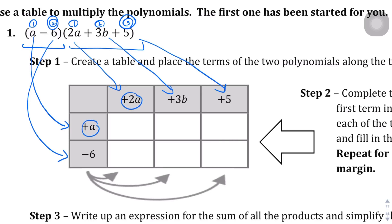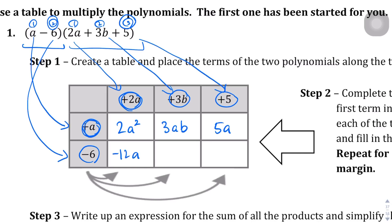Multiply a and 2a first to get 2a squared. Then a and 3b gives 3ab. Then a and 5 gives 5a. Moving to the next row: negative 6 and 2a gives negative 12a. Negative 6 and 3b gives negative 18b. And lastly, negative 6 and 5 gives negative 30. That's step 1 — well, step 2 — where we multiply everything in the table.